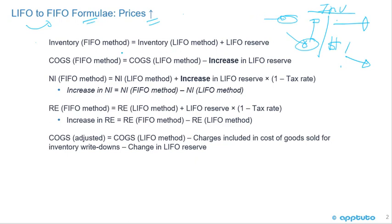So our inventory under the FIFO method is going to be the LIFO inventory plus the LIFO reserve. We get information on the LIFO reserve in the notes to the financial statements.